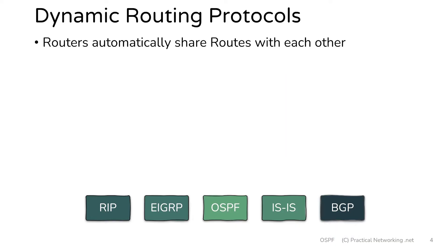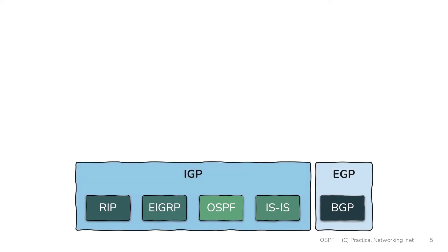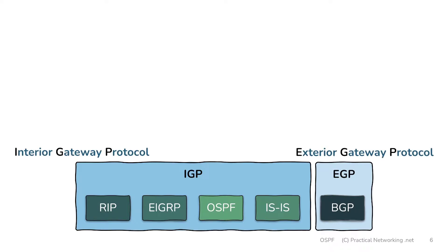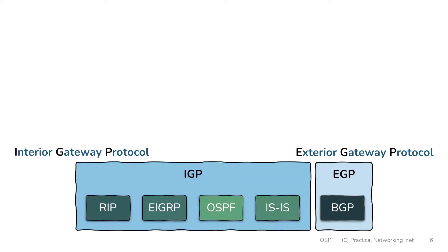The first categories we're going to discuss are IGPs and EGPs. IGP stands for Interior Gateway Protocol and they include RIP, EIGRP, OSPF, and IS-IS. EGP stands for Exterior Gateway Protocol, and the only EGP in use on the internet today is the Border Gateway Protocol, or BGP.